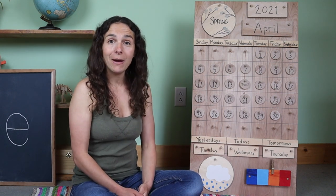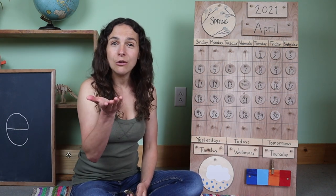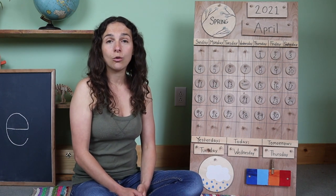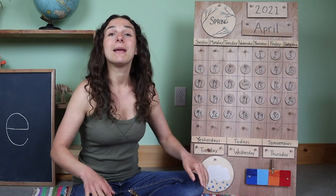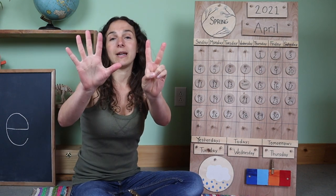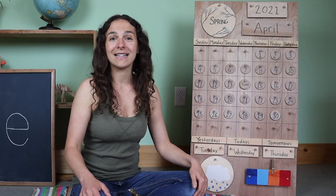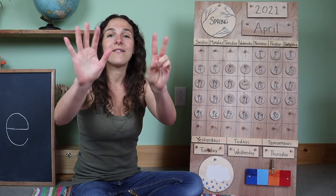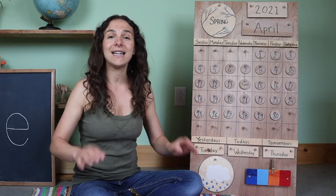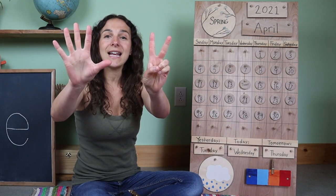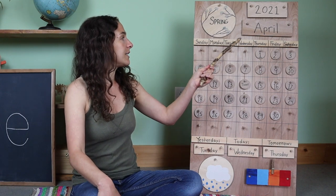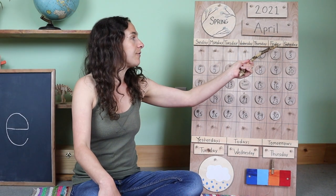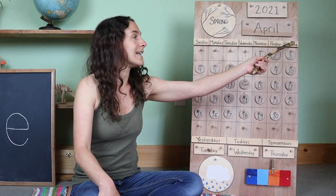Now it's time to sing the weather song together. Can you show me how many fingers we need to hold up for this next song? Seven — that's right, because we have seven days in the week. The song goes like this: there are seven days, there are seven days, there are seven days in a week. Sunday, Monday, Tuesday, Wednesday, Thursday, Friday, Saturday.